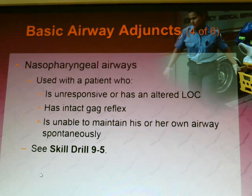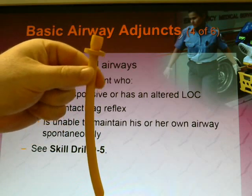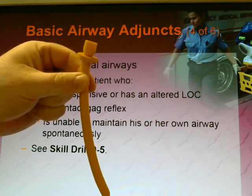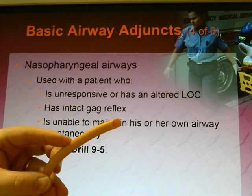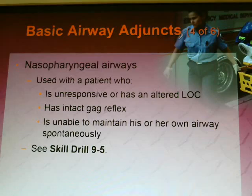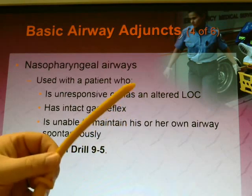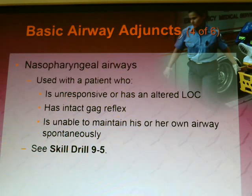Moving on to Nasopharyngeal Airway, an NPA. This device goes down somebody's nose into their nare. We use it starting in the nose. This is used with a patient who is unresponsive or who has an altered level of consciousness. If a gag reflex is in place, we can use this airway to maintain an open airway, or if the patient is unable to maintain his or her own airway spontaneously. You can review this at Skills Drill 9.5.